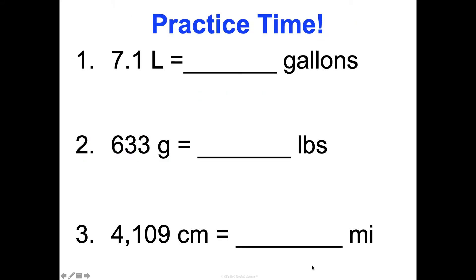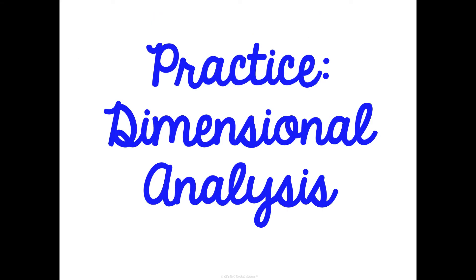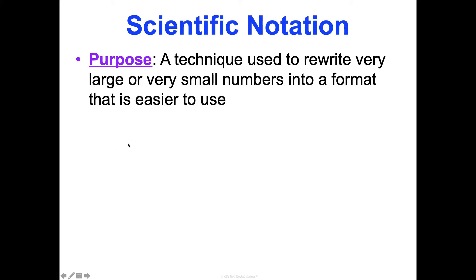Now we're going to talk about the second math skill we'll be using this year: scientific notation. The purpose of this technique is to rewrite very large or very small numbers in a form that's easier to use and easier to look at. I first showed you this when I showed you the number for what one mole is — that was a crazy big number. Scientific notation is much easier to work with than that giant number.